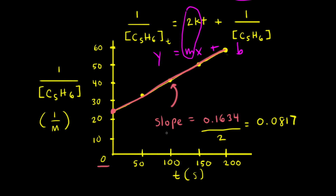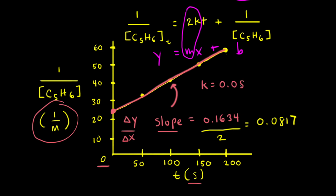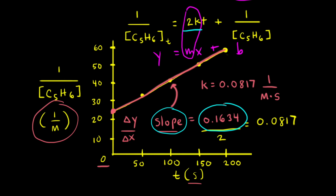To find the rate constant K, we divide the slope by 2, which gives us 0.0817. To find the units for K, remember that slope equals change in Y over change in X. On the Y axis, units are 1 over molar, and on the X axis, units are seconds. So K equals 0.0817, which is 1 over molar divided by seconds, or 1 over molar times seconds. Most textbooks don't cover how the 2 as a coefficient changes the integrated rate law, and so many books would simply say the slope equals K, giving a rate constant of 0.163 inverse molar times seconds.